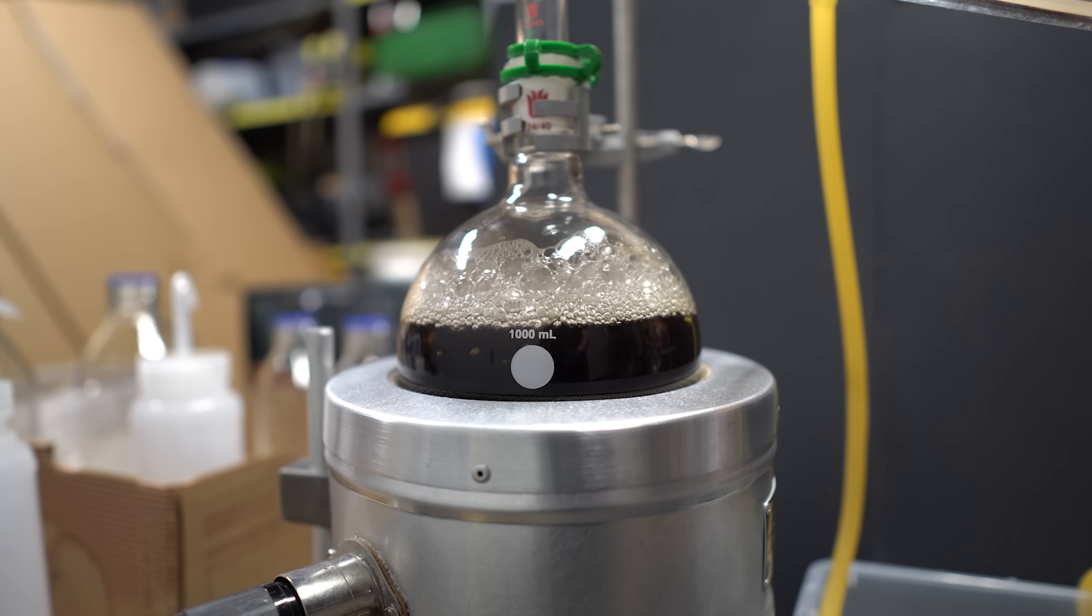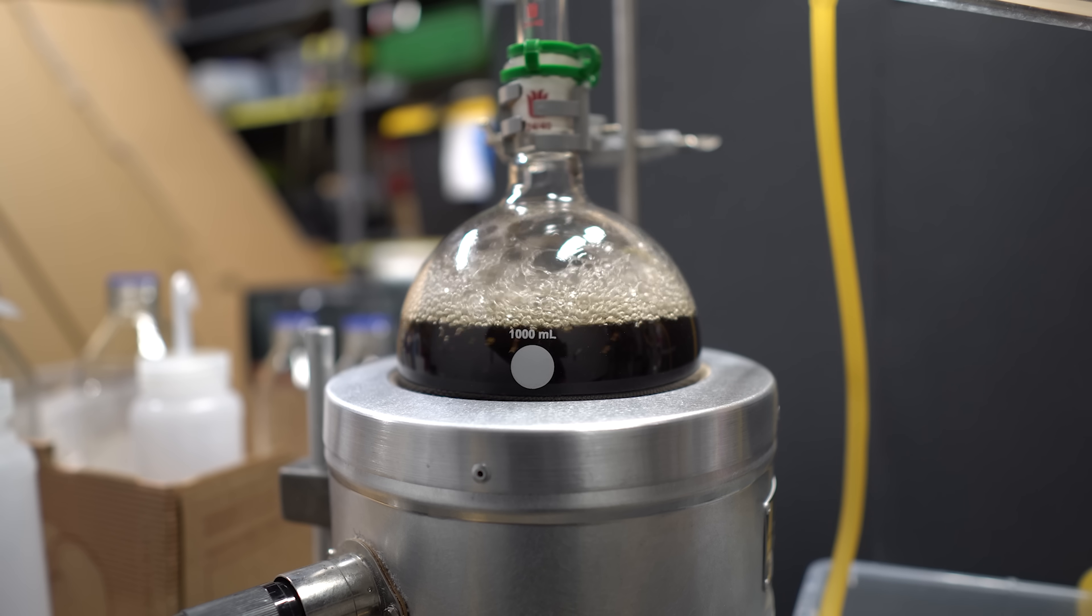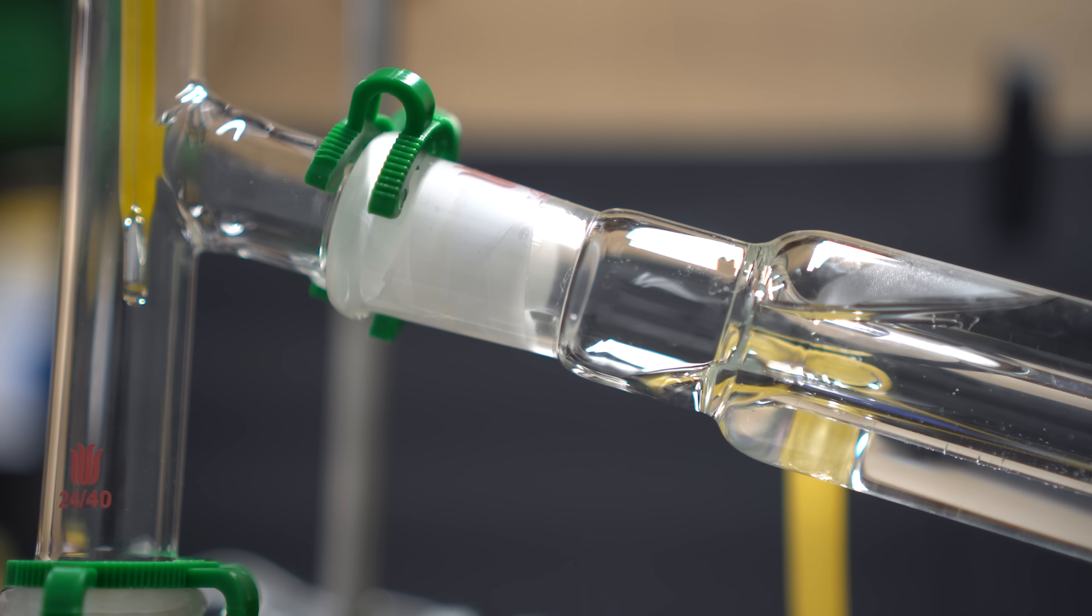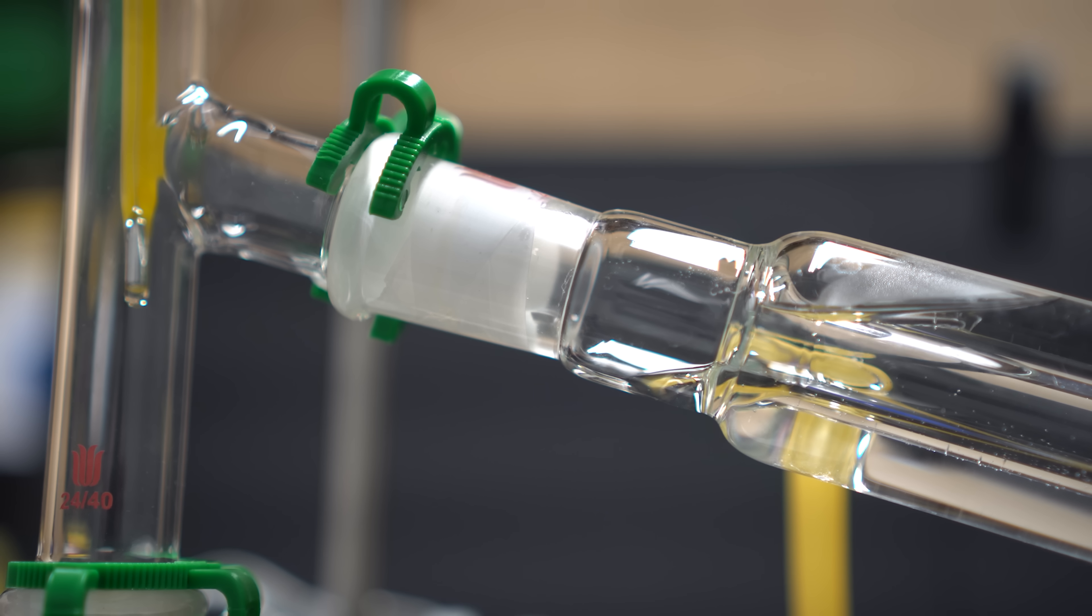As things started to heat up more, it actually started to froth more. This kind of did make me a little nervous, but the frothing really didn't go into the tube, and we're just fine. Essentially, what we're going to do is collect all of the distillate, all the way up to 124 degrees Celsius.